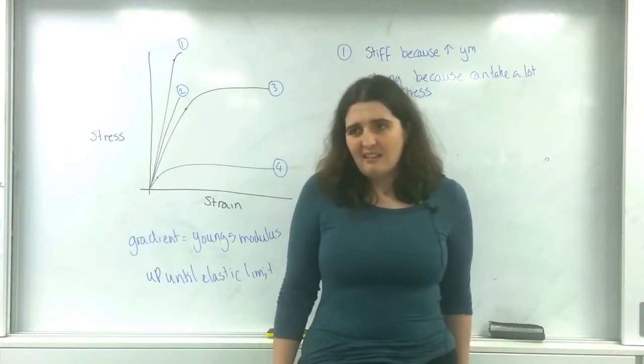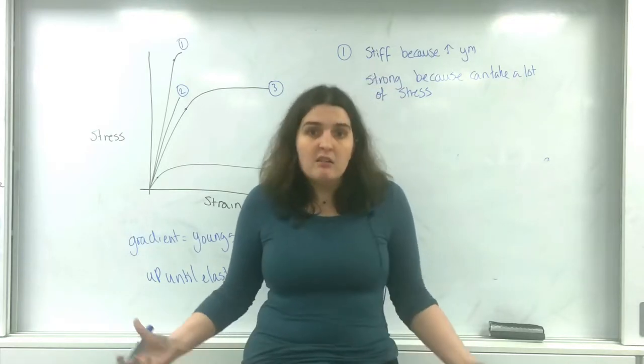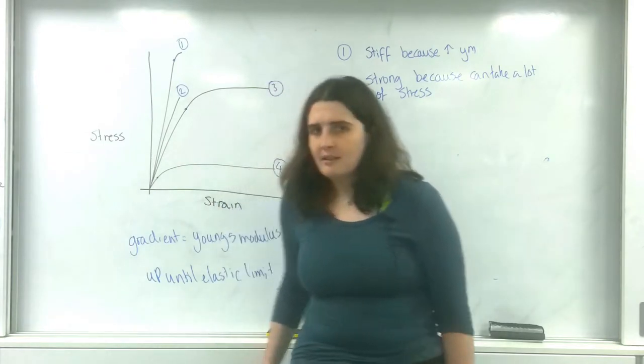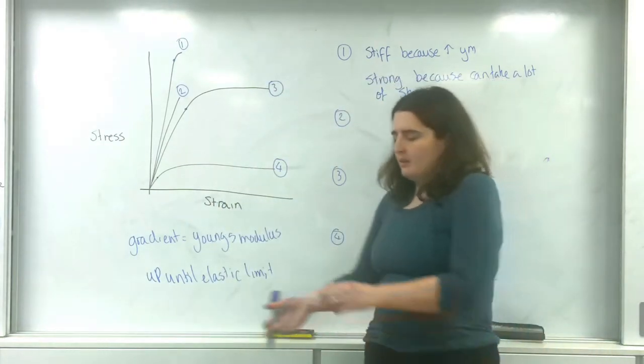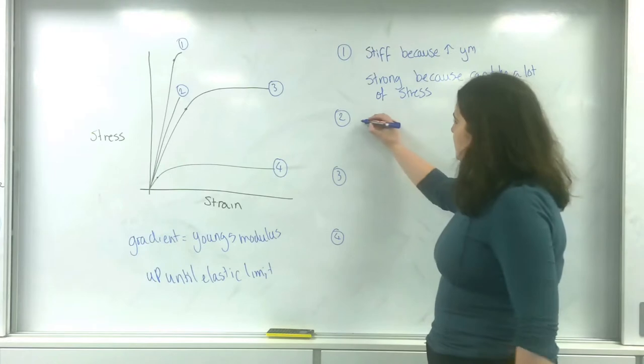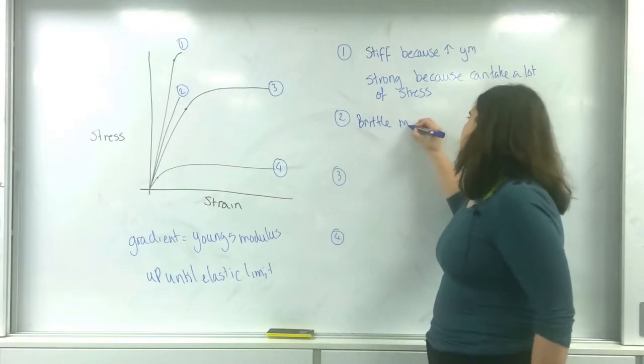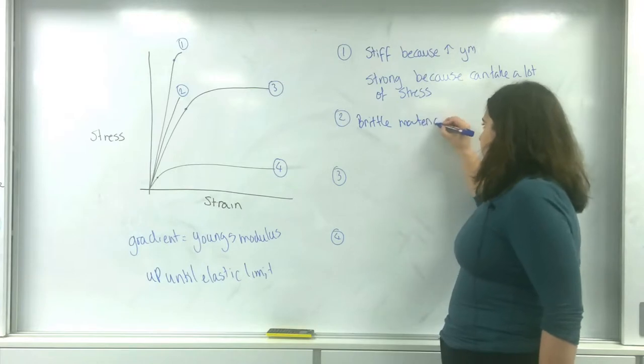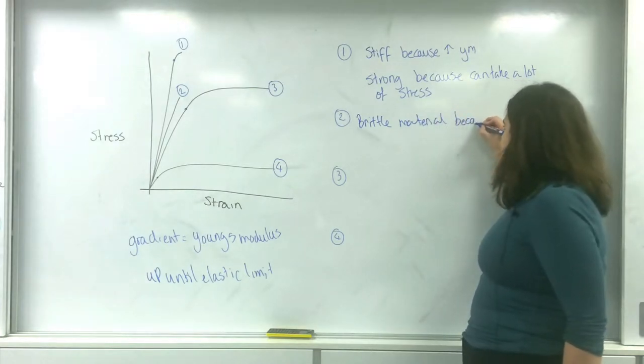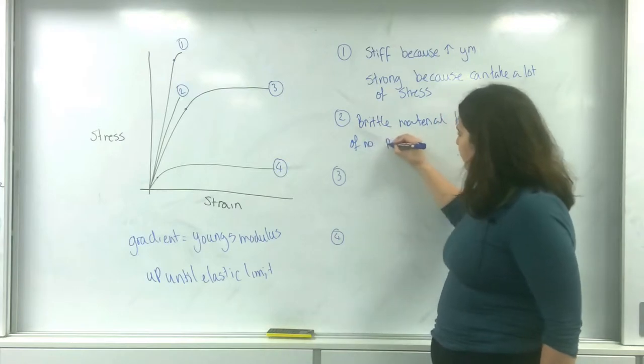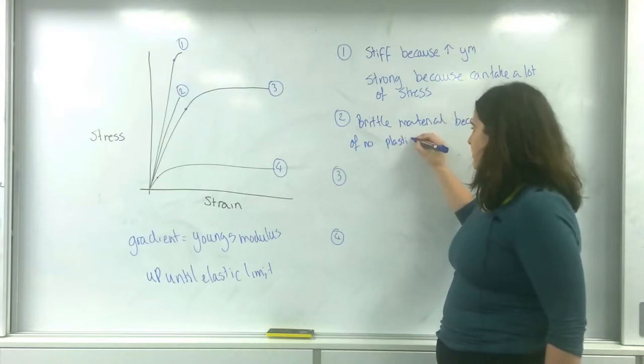Materials that do that are brittle. Glass doesn't really change its shape at all. You break it and it just shatters. There's no warping like your jumper. This is a brittle material because of no plastic region.